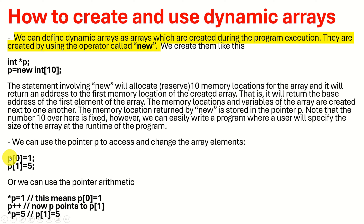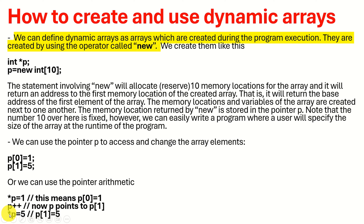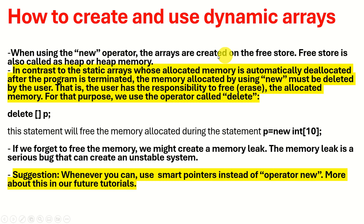We can use the pointer p to access and change array elements. For example, to assign a value to the first array element we type p[0] = 1, and to the second element we assign 5 like this. Or we can use pointer arithmetic: we write *p = 1, which is equivalent to p[0] = 1. Then we increment p so it points to p[1], and store the value 5 in p[1]. Simple as that.